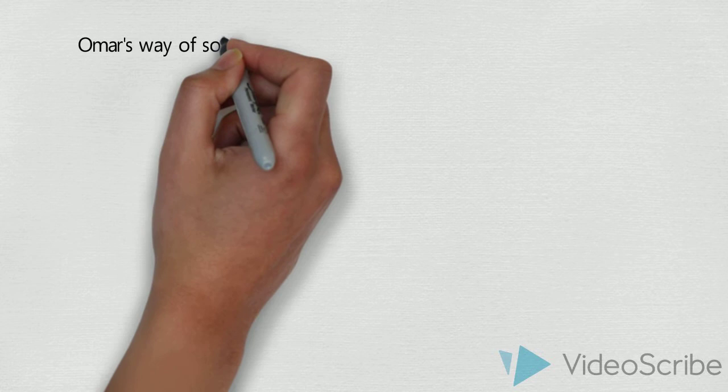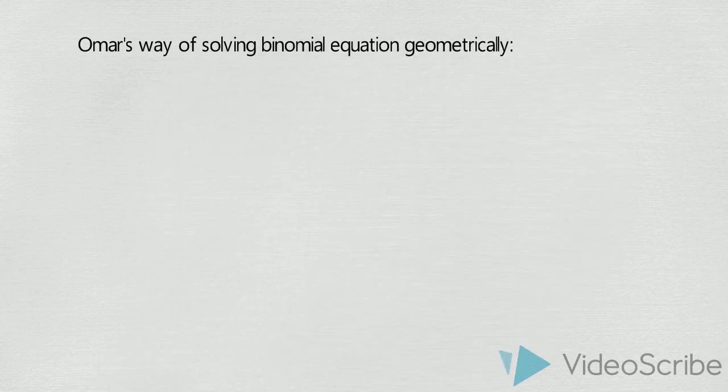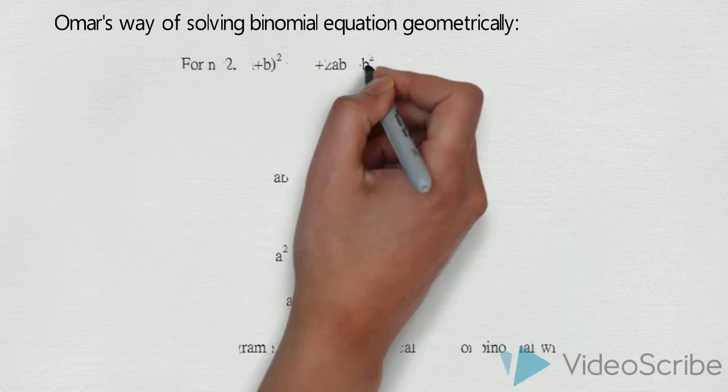Omar's way of solving binomial equations geometrically is given by these four boxes